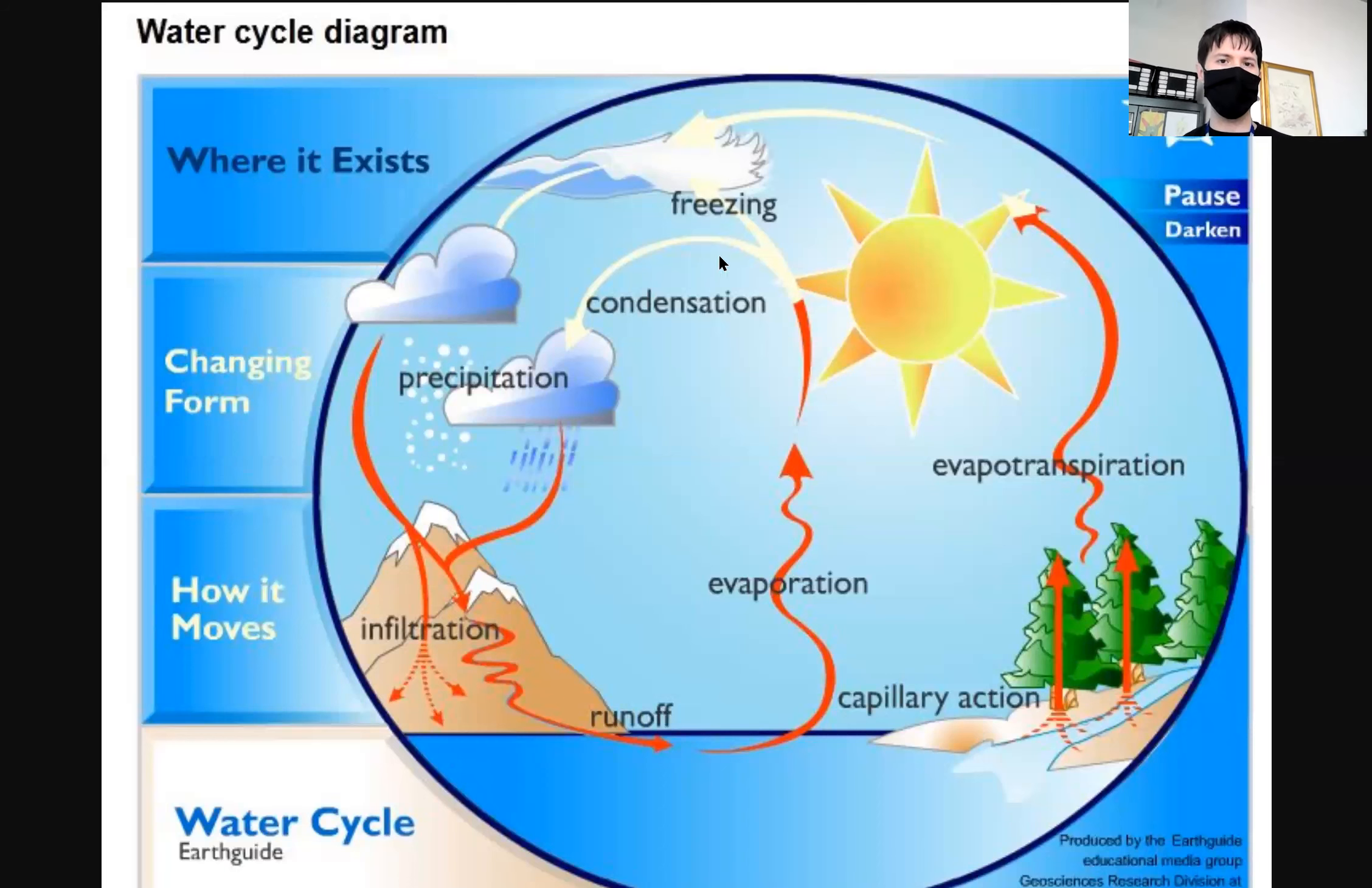Like these really high wispy clouds where it says freezing right there, those are usually made of ice crystals. It is really hard to know by looking, because a lot of the rain that we get actually starts as snow, but by the time it comes down to the ground where it's warmer, it melts before it can hit the ground. So I couldn't tell you, maybe an earth scientist could.